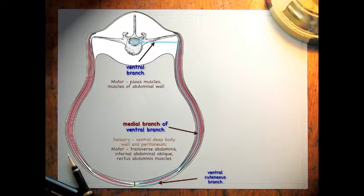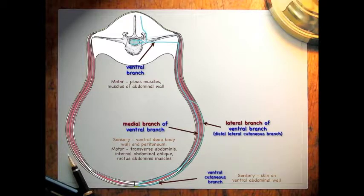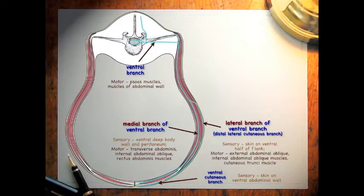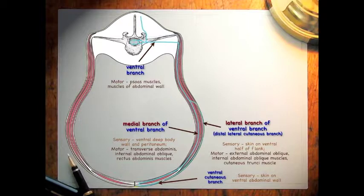The ventral cutaneous branch is going to be sensory to the skin of the ventral abdominal wall. The lateral branch of the ventral branch is going to provide innervation to the skin of the ventral half of the flank, and motor to the more superficial muscles of the abdominal wall — the external and internal abdominal oblique muscles as well as the cutaneous trunchi muscle.